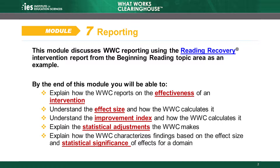This module will describe how the WWC reports on the effectiveness of an intervention. We will explain how the WWC defines and calculates an effect size and improvement index. We will also describe the statistical adjustments that the WWC may make during the process of a study review, and we will explain how the WWC characterizes study findings.